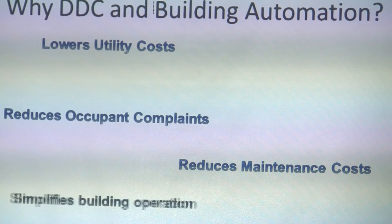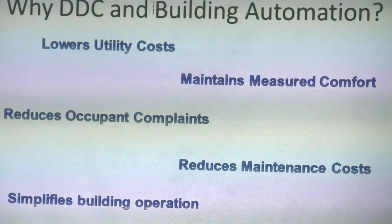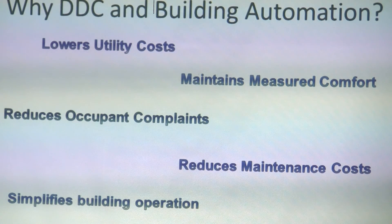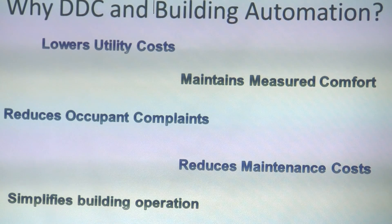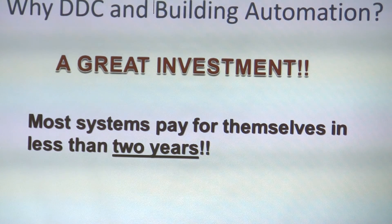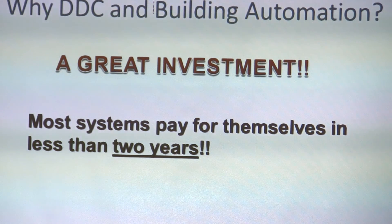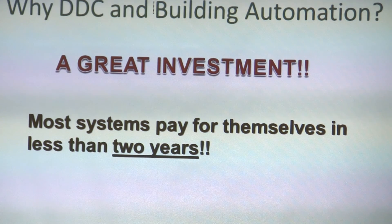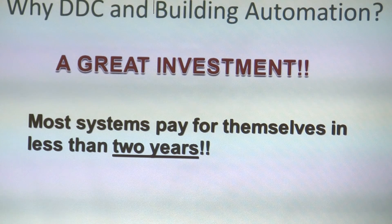DDC also reduces maintenance costs, simplifies building operation, and maintains measured comfort. DDC is very exact — it gets in there and does exactly what you want, with effective set points and lockout set point temperatures. It's a great investment. Most systems pay for themselves in less than two years, and now with energy rebates and government programs, depending on how big your system is, you can sometimes pay for it in as little as six months or even right away.